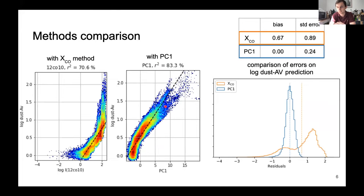We can see that for the PC method we have no systematic error, which means no bias, and the variance of the error is quite low. While for the XCO-based method there is a systematic error and the variance is quite high.